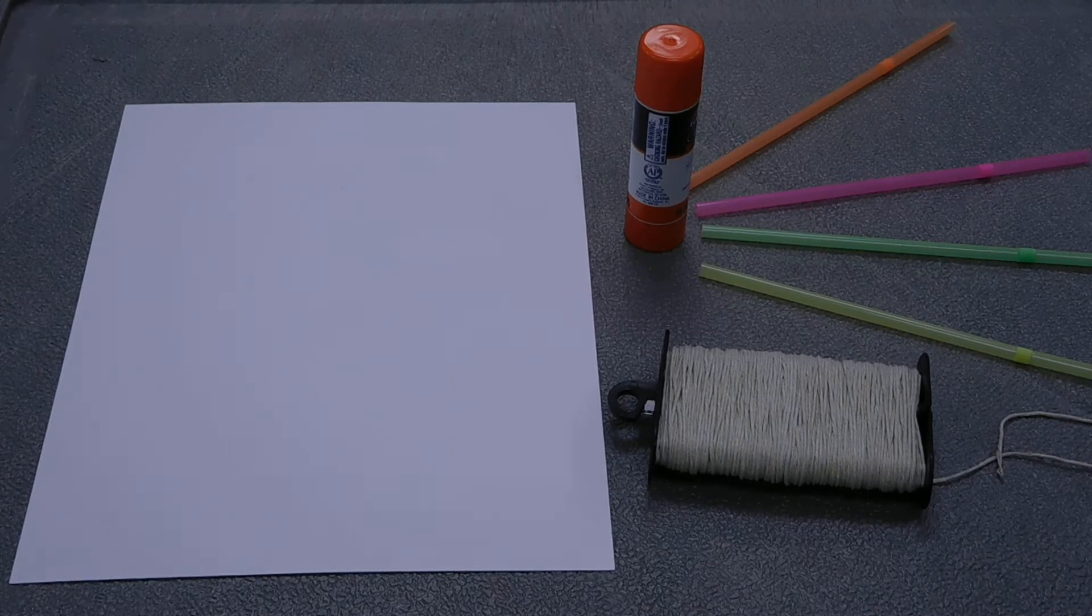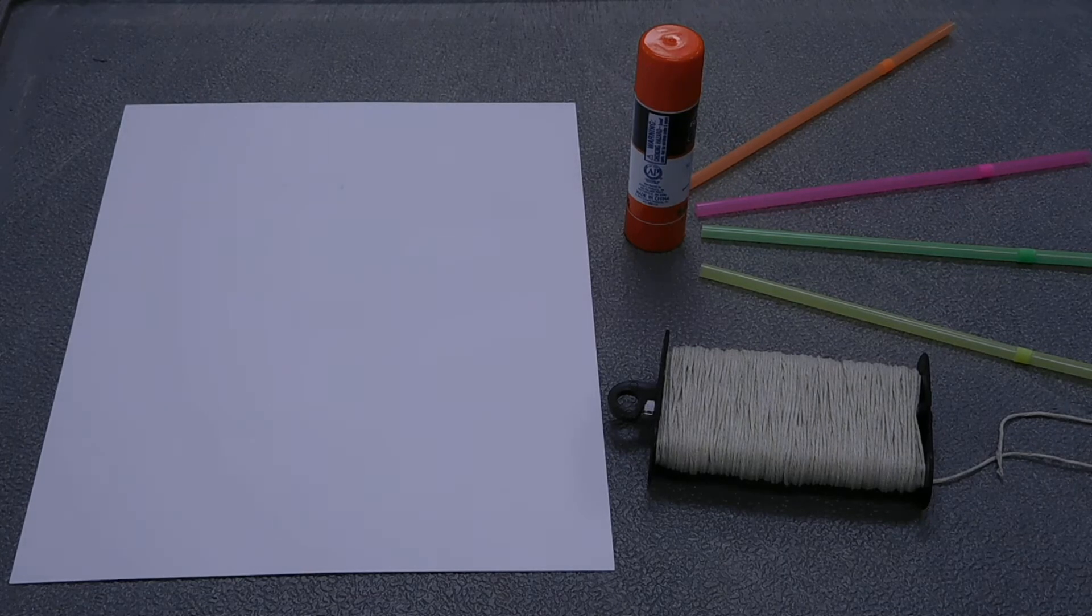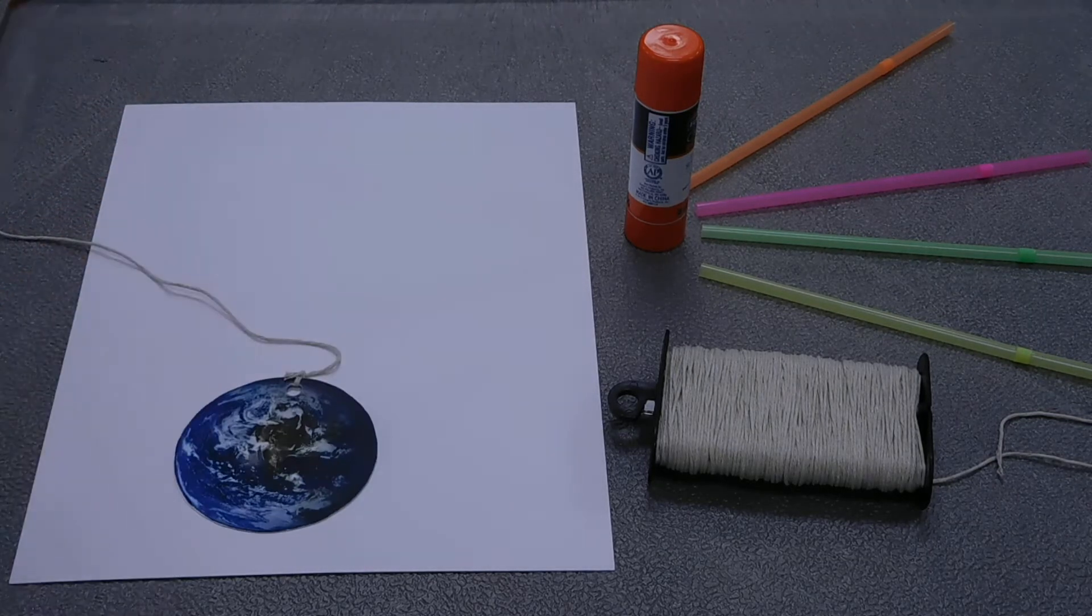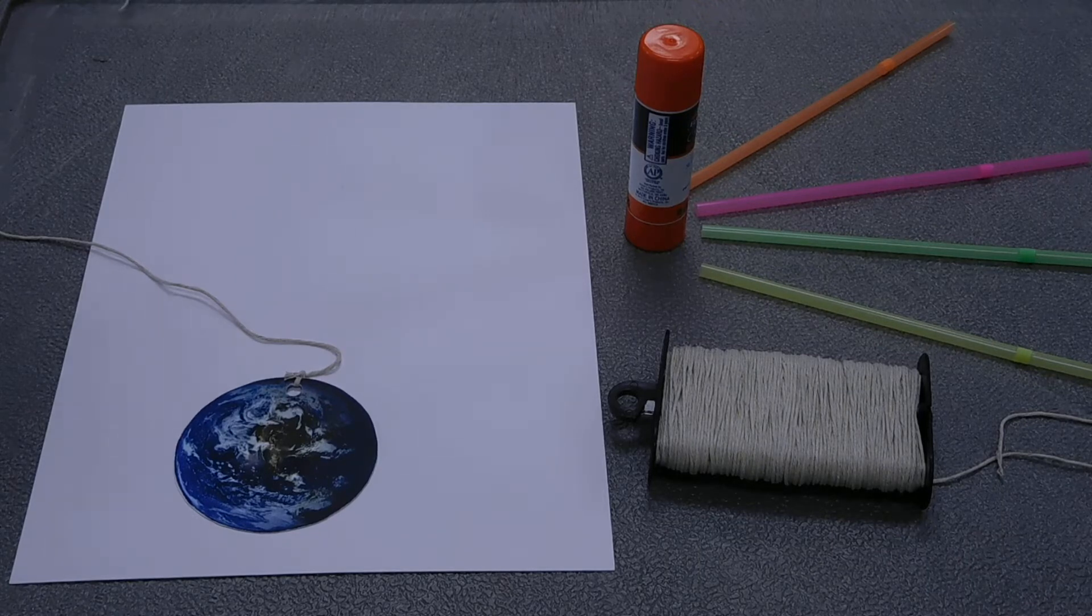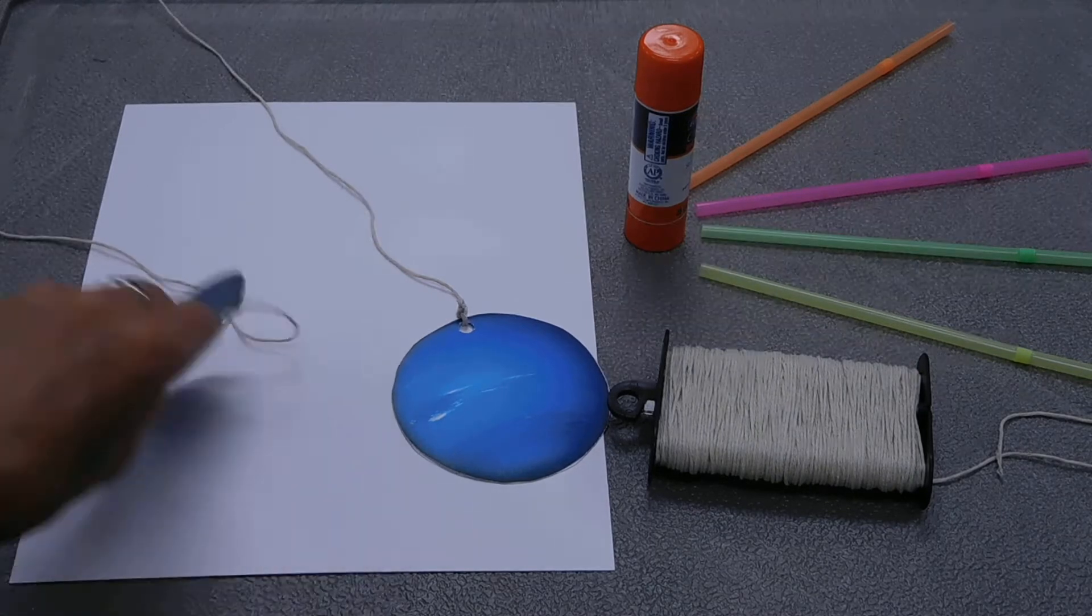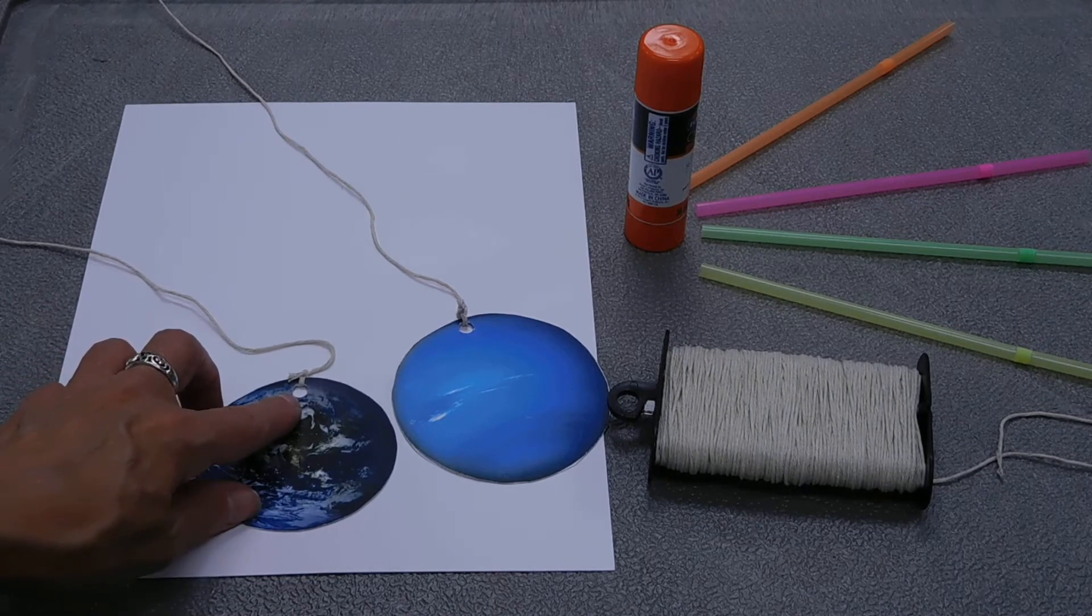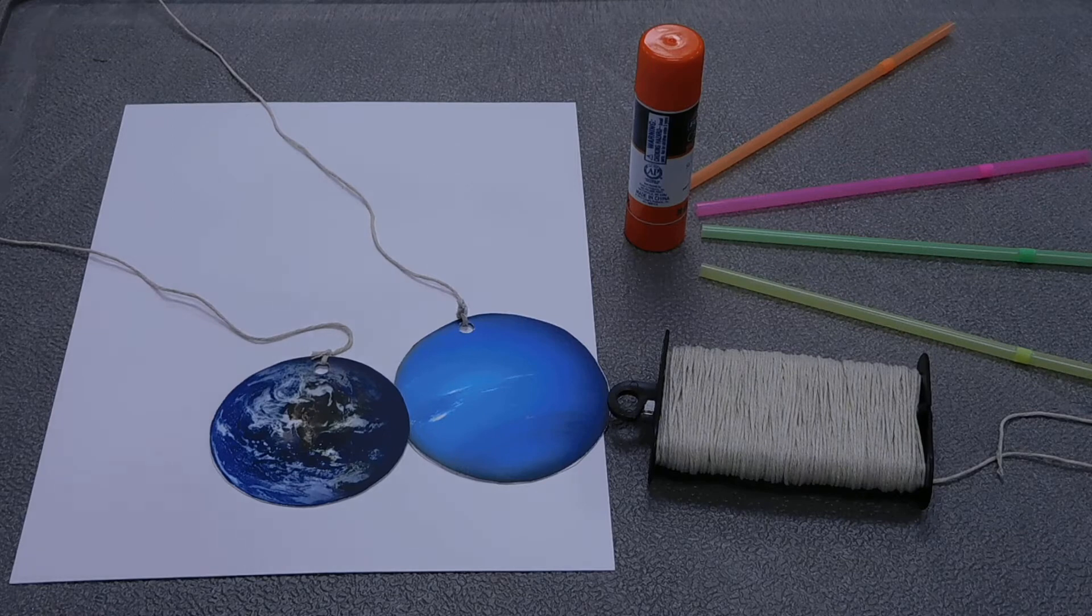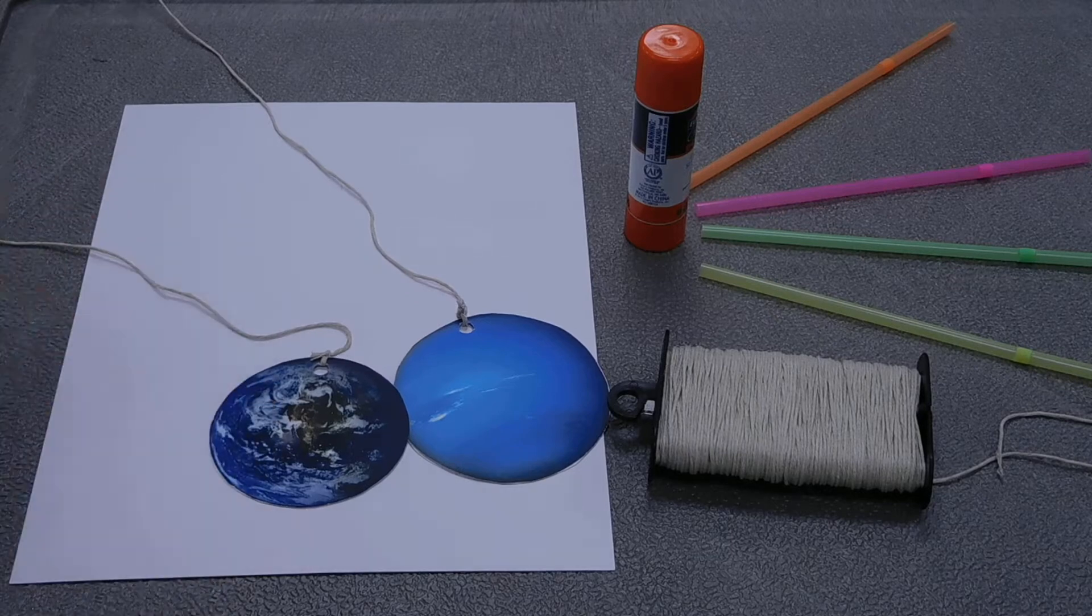And because I wanted my mobile to incorporate the planets, I printed planets onto cardstock. And for each planet I made two. And then I used glue to glue them together so they're double sided. I used a hole punch to punch a hole in them. And then I attached string. And with the string, we will attach the pieces to the mobile.